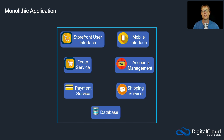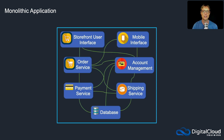Customers might log in to check their accounts, update their details, or see the progress of their orders — so there's another application component for account management. We then have the actual payment service, which is your payment gateway, so when they place an order it has to talk to the payment service. And we've got a shipping service and a database for storing information. As you can imagine, there are lots of different ways these components talk to each other, and this is probably not all of them — there could be a lot more. So it becomes very complex.